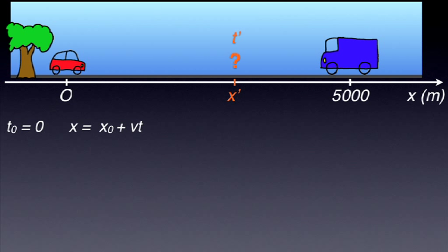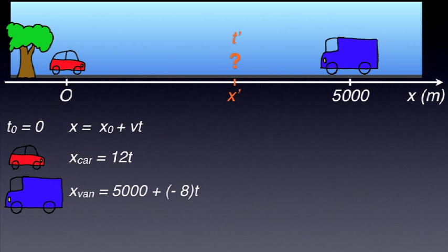Let's write the equation of motion for the red car. x equals 12t. We considered here, for simplicity, that the origin of our x-axis coincides with the initial position of the red car, and the positive direction of the x-axis coincides with its direction of motion. Now, let's write down the equation of motion for the blue van. The initial position is 5 kilometers away, so x0 is 5000 meters. The car moves at 8 meters per second to the left. Therefore, v equals minus 8 meters per second. And the equation is x equals 5000 minus 8t.